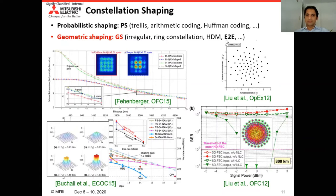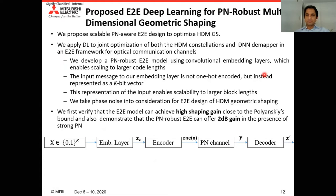This brings us to our proposed method: an end-to-end deep learning method for robust phase-noise robust multi-dimensional geometric shaping. We propose a scalable model designed to optimize high-dimensional modulation via geometric shaping. Many existing end-to-end methods use a one-hot encoder, which limits practical application to smaller code lengths. In our method, we use a k-bit vector as input, which allows scalability to larger code lengths. We also use a tail-biting convolution embedding layer that helps scale to larger code lengths and makes the system robust to phase noise.